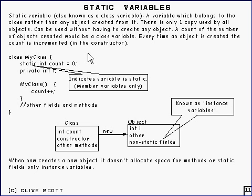If you think about that, a count is a property of the class itself, not the object. There's no point in each object having a count of the number of objects because it doesn't know. The thing that knows is the class, because it's the class that creates the object. So that count would belong to the class — that's why it's called a class variable.